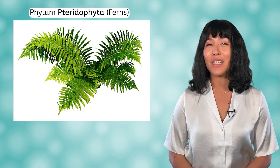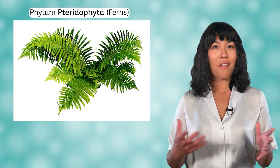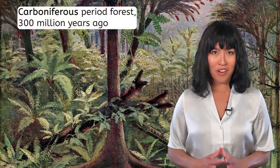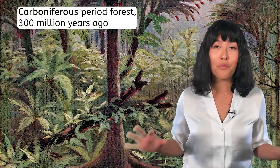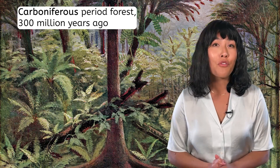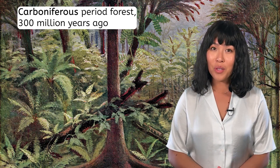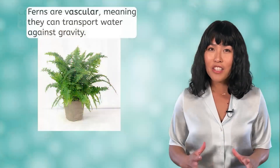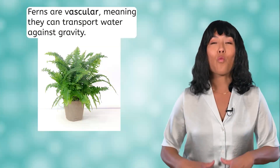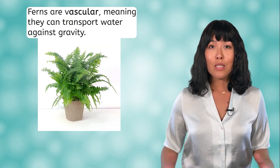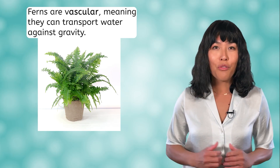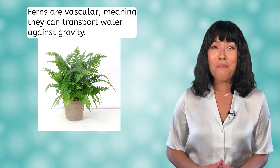The pteridophyte phylum is primarily composed of ferns. These bushy plants dominated the earth during the Carboniferous period in huge swampy forests. They were some of the first land plants, and also the first vascular plants. Vascular plants have the ability to transport water longer distances — specifically up, against gravity — so ferns can grow taller than mosses.